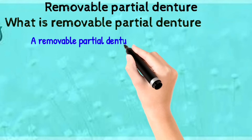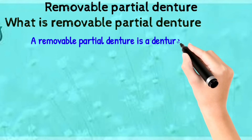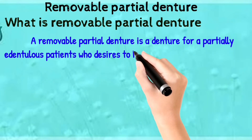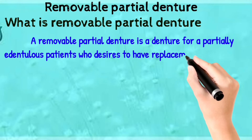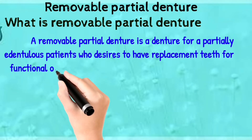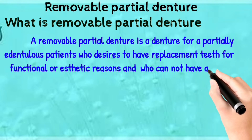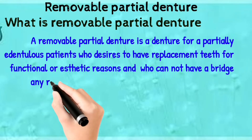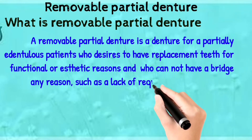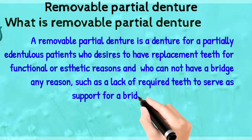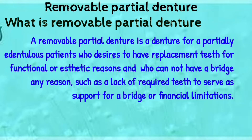A removable partial denture is a denture for a partially edentulous patient who desires to have replacement teeth for functional or aesthetic reasons, and who cannot have a bridge for any reasons, such as a lack of required teeth to serve as support for a bridge, or financial limitation.